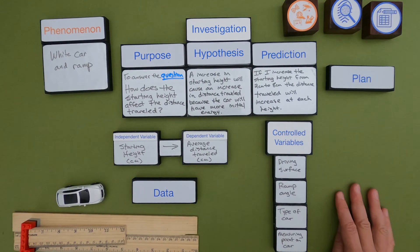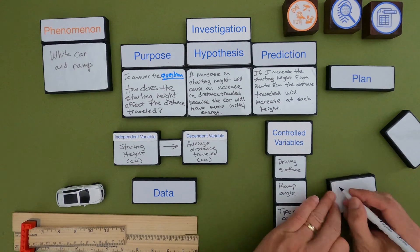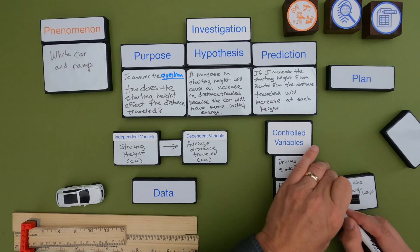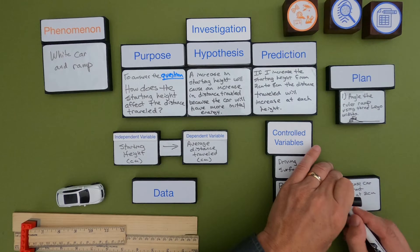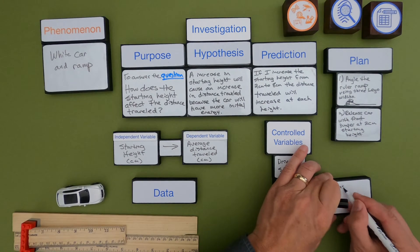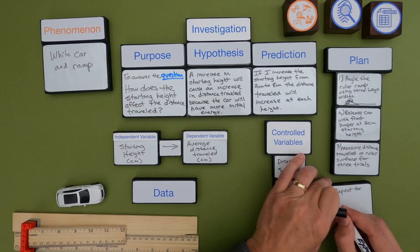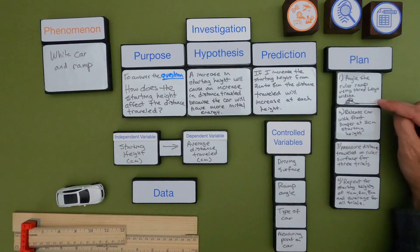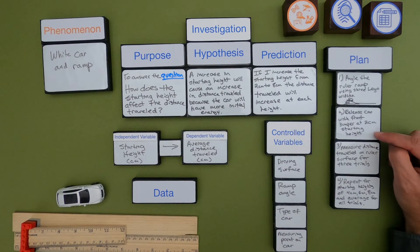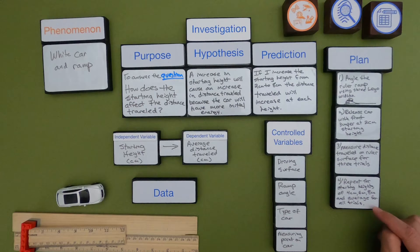Now all I have to do is write up a plan — something that someone could follow. I could give them this material and they could just follow my plan and get similar results. My plan is: angle the ruler ramp using three Lego widths; release the car with the front bumper at a two centimeter starting height; measure the distance traveled on a ruler surface for three trials; and repeat at starting heights of four, six, and eight centimeters, averaging all trials.